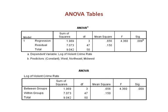Further evidence of how one-way ANOVA and simple OLS regression are related can be seen by laying the ANOVA tables from the two models side by side. Notice that in our example we get the same result.